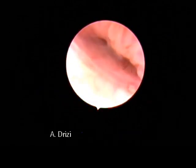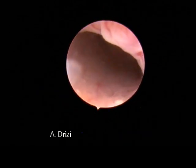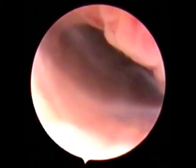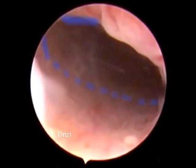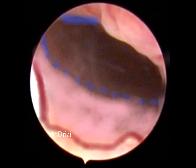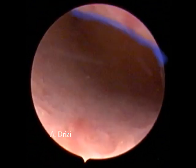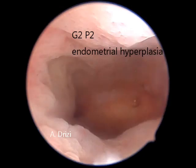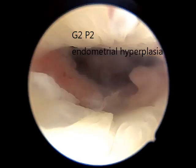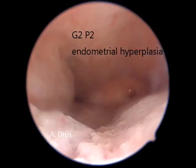Another patient, G2P2 — the anatomical ostium is less visible here; one needs to be more careful. We can identify the anatomical ostium, the histological ostium, and the uterine isthmus between them.